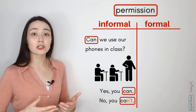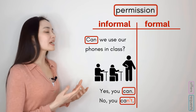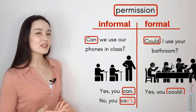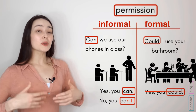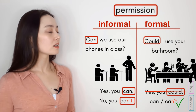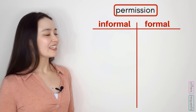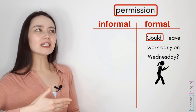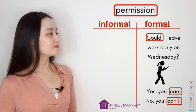To make permission requests more formal, change 'can' to 'could.' Imagine you go to someone's house for the first time: 'Could I use your bathroom?' When we give or refuse permission, we use 'can' and 'can't.' 'Could I use your bathroom?' 'Yes, you can.' Imagine you message your boss: 'Could I leave work early on Wednesday?' 'Yes, you can.' 'No, you can't.'